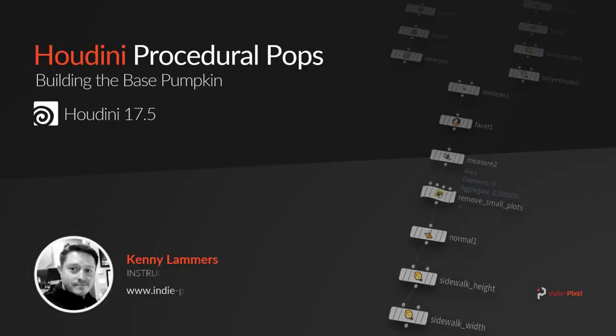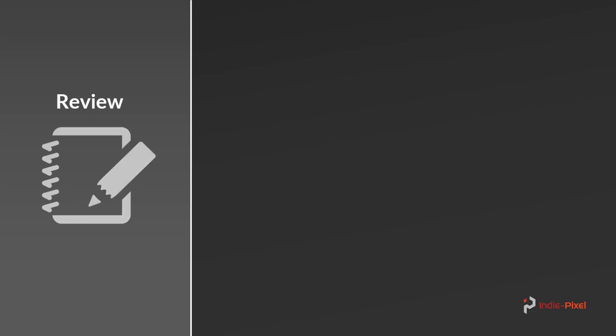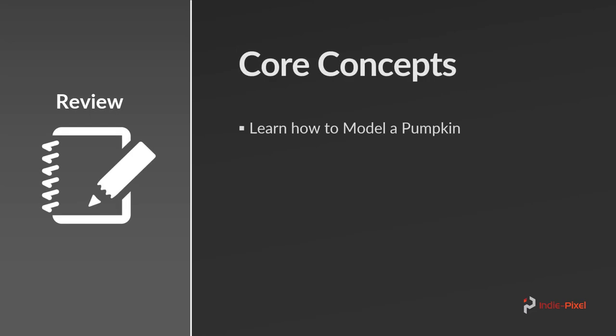Let's get started with our pumpkin by building the main area — the main part of the vegetable. We're going to focus on just that base pumpkin, so let's talk about what we're going to do in this section. We're going to learn how to model a pumpkin, just the base part of it. We'll move on to the stem and the face and all the cool stuff in later sections.